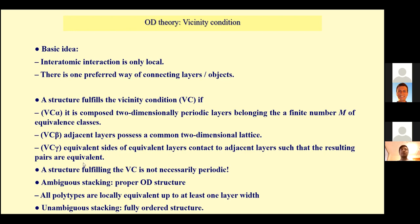A structure which matches the vicinity conditions is not necessarily periodic. In this case, when we have two possibilities: fully ordered structures described by one of the 230 space groups, or disordered structures which cannot maintain periodicity — we get the case of polytypism and OD structures.